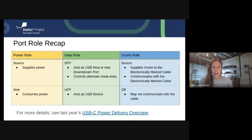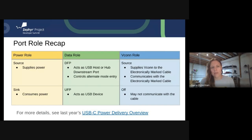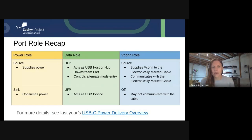Next is the data role. You're either a DFP — acting as a USB host or a hub downstream port — or you're going to be a UFP, where you're a USB device like a thumb drive or a mouse. The DFP has more control over the connection: it controls alternate mode entry and whether you go into USB 4 mode. So if those are things you need to control from your own device, DFP is probably the data role you need.